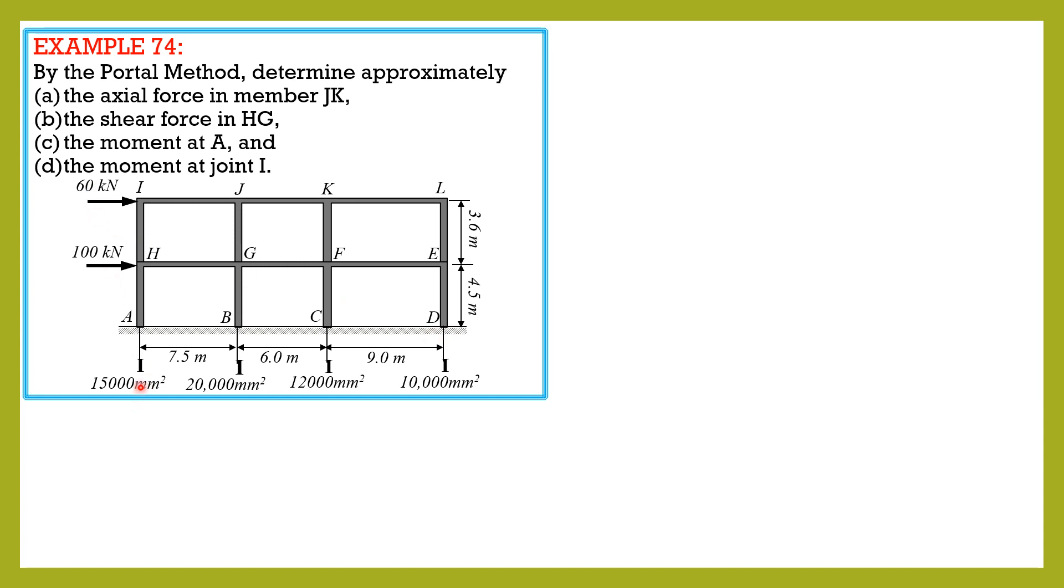Areas are given, but because the method is portal method, these areas are not used. In cantilever method we can use this. So let's denote the shear in exterior column as V2, interior columns 2 times V2. By principle this is also 2 times V sub 2, then V sub 2 also. In this junction we have at the center or midpoint of the member V1, 2 times V1, 2 times V1, and that's V1.